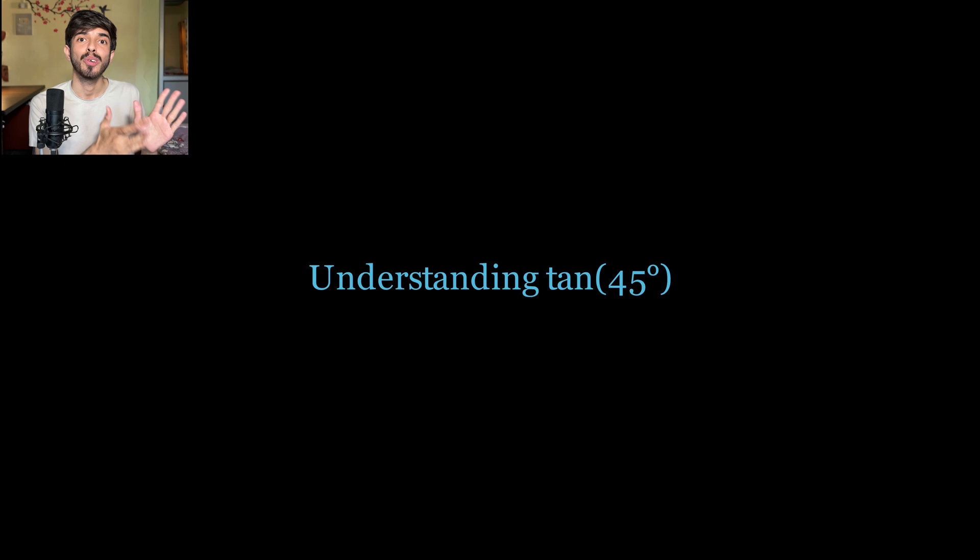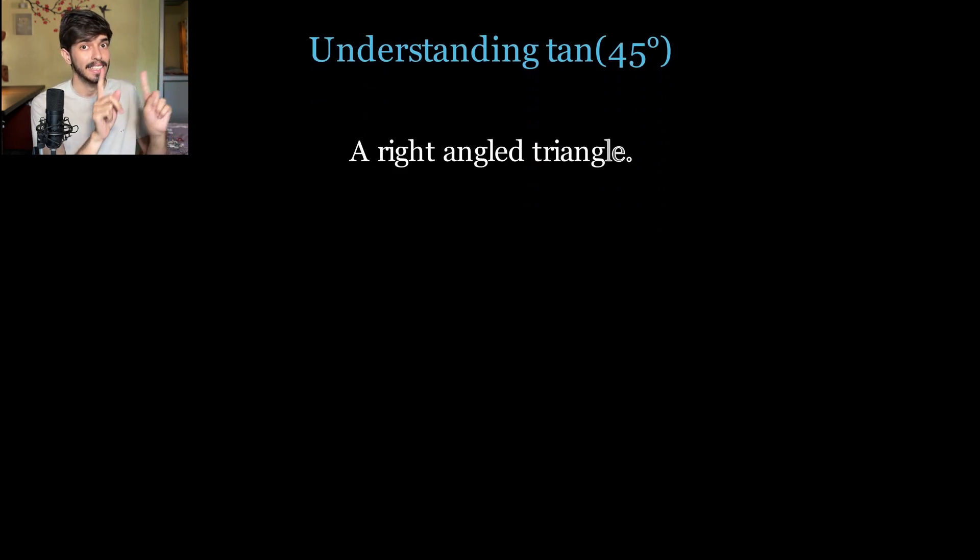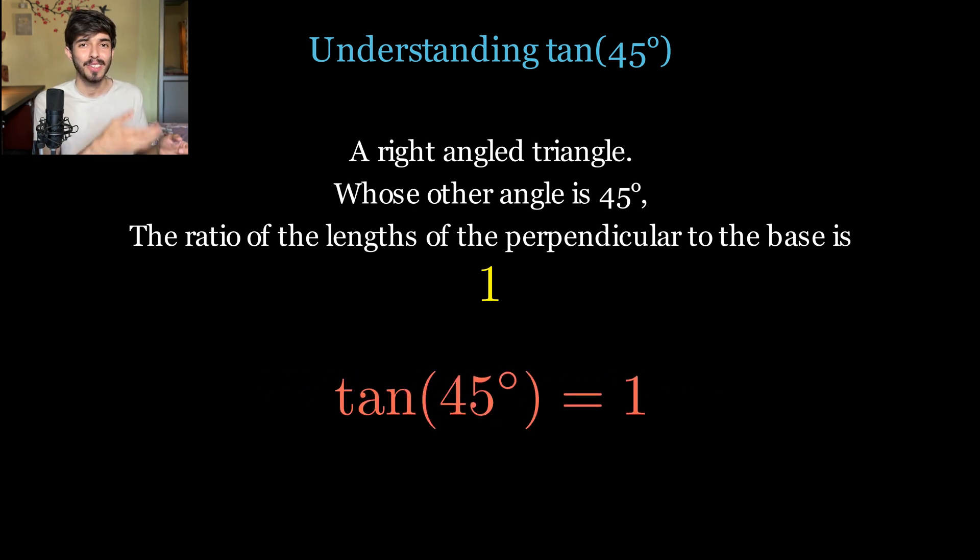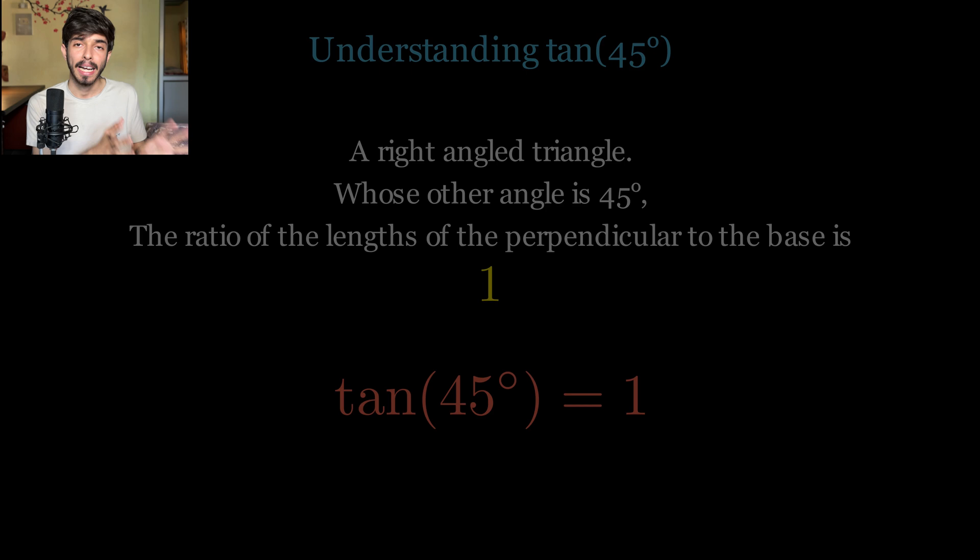So now see, what does it mean to say tan 45 degree? See, it means a right angle triangle. That means one angle fixed to 90 degrees and the other angle fixed to 45 degrees. The ratio of the perpendicular of that triangle and the base of that triangle is 1. So instead of saying this long line, we say tan 45 degree is equal to 1. See, always keep this thing in mind while studying math. Math is nothing but a language. We can also do all the math that we do in English. But we would need to write long pages just to write simple equations. So that's why math is there. So instead of saying this long line, we say tan 45 is equal to 1.